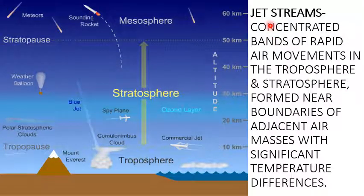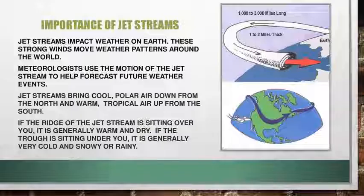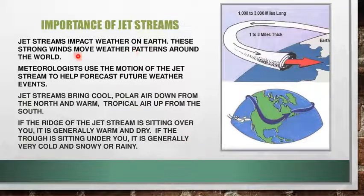Then jet streams — jet streams are defined as upper air surface currents in the troposphere and stratosphere. They are the concentrated bands of rapid air movements formed near the boundaries of adjacent air masses with significant temperature differences. Jet streams impact weather on the earth. These strong winds move weather patterns around the world. Meteorologists use the motion of jet streams to help forecast future weather events.